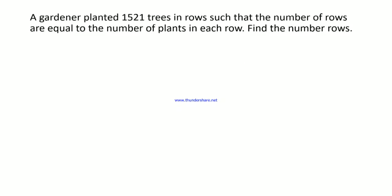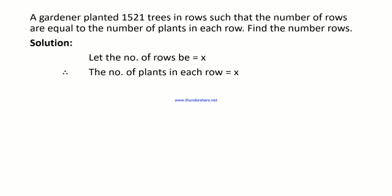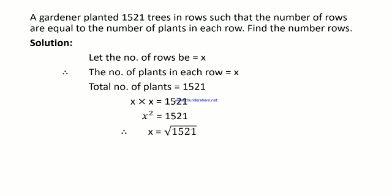Next question: A gardener planted 1521 trees in rows such that the number of rows was equal to the number of plants in each row. Let the number of rows equal x. Then the number of trees in each row is also x. So the total number of plants is x × x = x² = 1521. Therefore, x equals the square root of 1521.